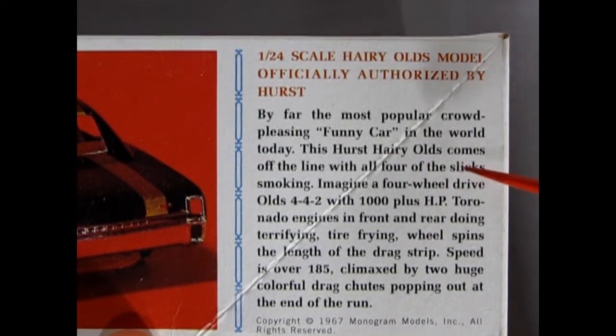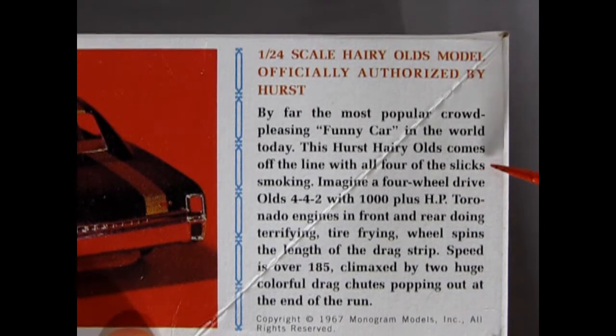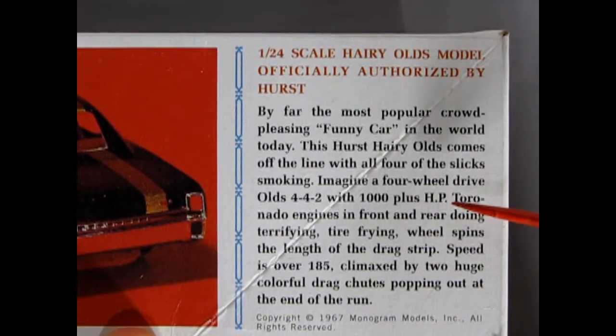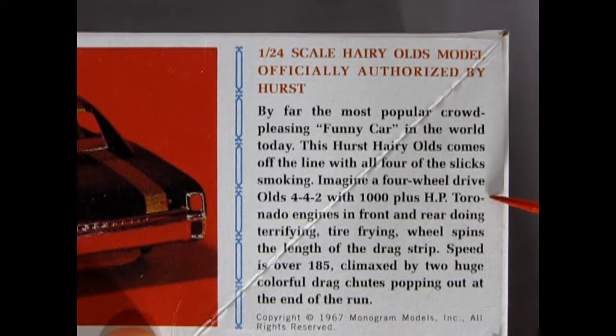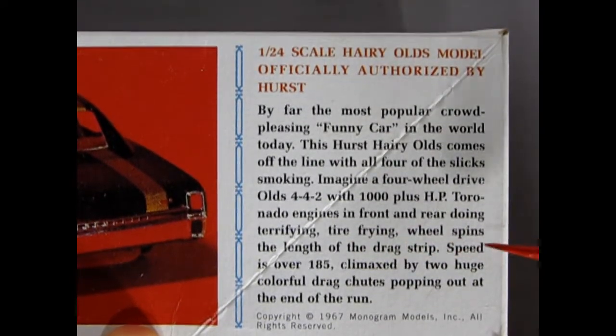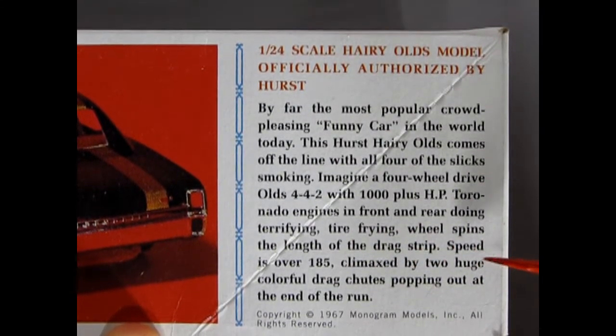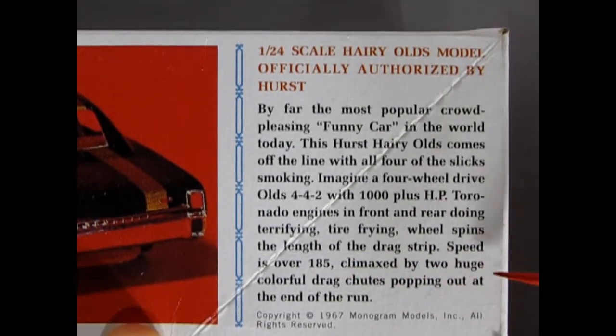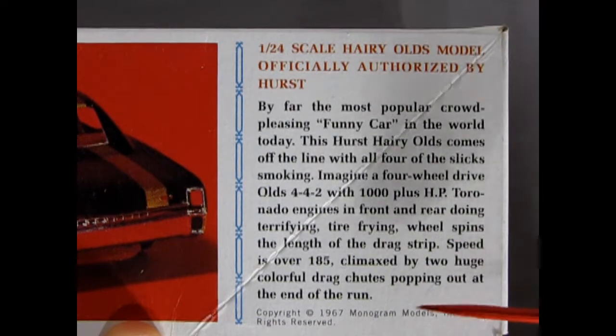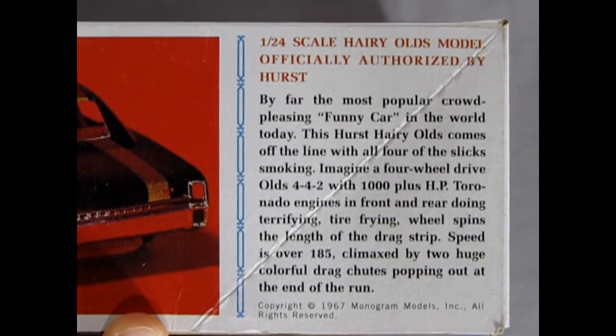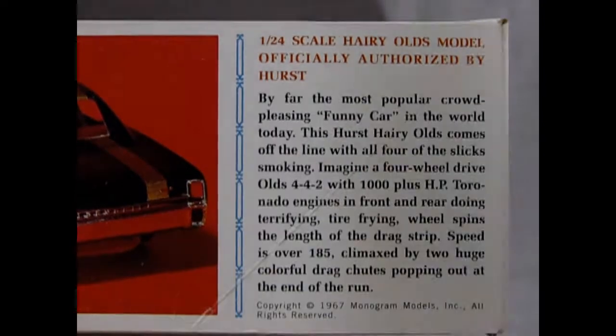This Hurst-Harry-Olds comes off the line with all four of the slicks smoking. Imagine a four-wheel drive Olds 442 with 1,000 plus horsepower Tornado engines in front and rear doing terrifying tire-frying wheel spins the length of the drag strip. Speed is over 185 miles an hour climaxed by two huge colorful drag chutes popping out at the end of the run. See what I mean here? Copyright 1967 Monogram models. I don't know, this could be original.